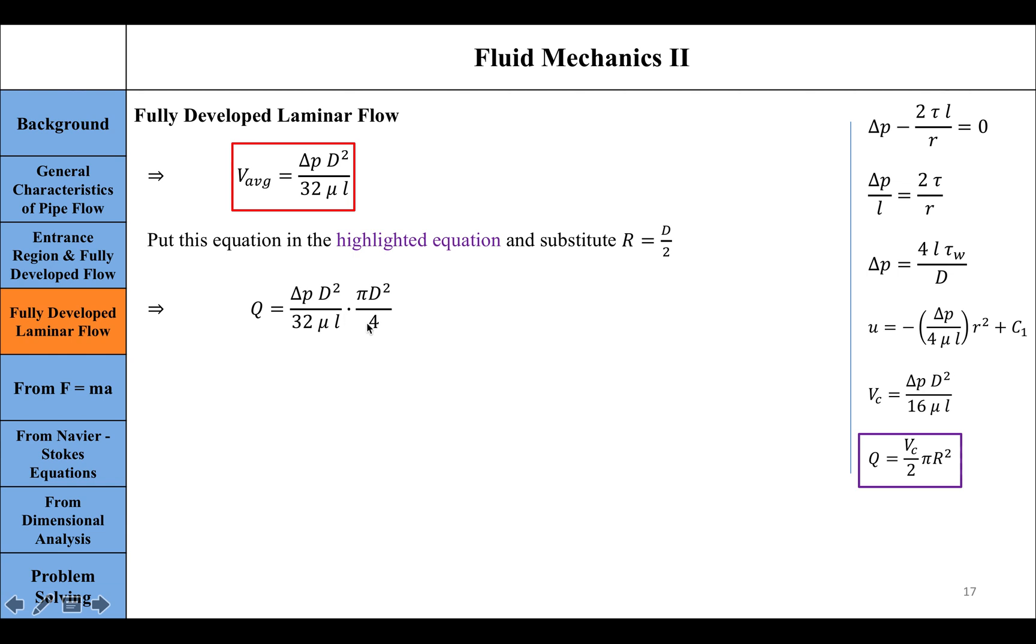If we simplify it further, this equation is what is known as Poiseuille's law for fully developed laminar flow in a horizontal pipe. These two equations are valid for horizontal pipes.